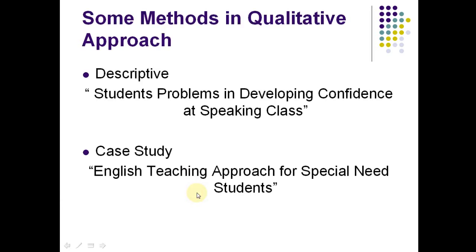What about qualitative? Qualitative is divided into descriptive and others. The difference between quantitative and qualitative descriptive is mainly in the instruments. In qualitative, we mostly need interviews and observations, whereas in quantitative descriptive, we usually distribute questionnaires and similar tools.